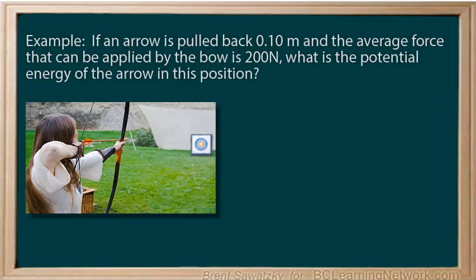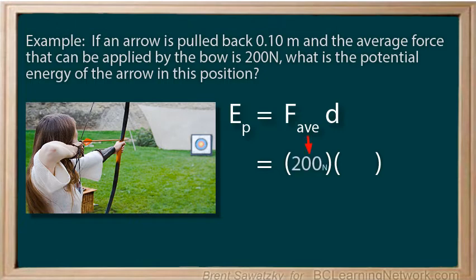Okay, well first, let's write down our equation to be used. In this case, Ep equals Fav, or average force, times d. Next, replace the Fav and d with brackets. The average force is 200 newtons, and the distance is 0.1 meters.